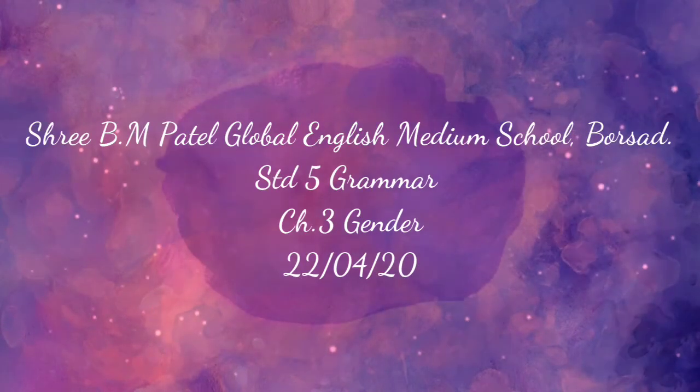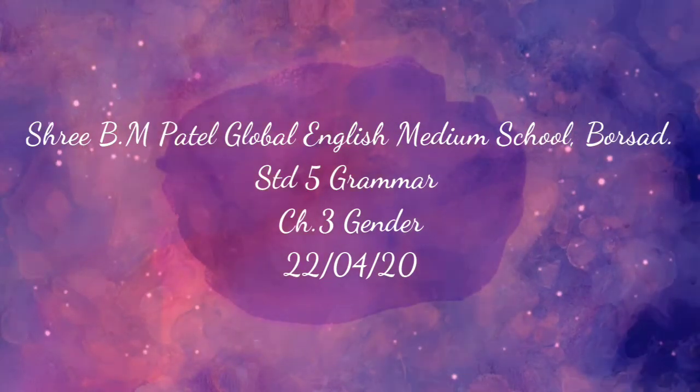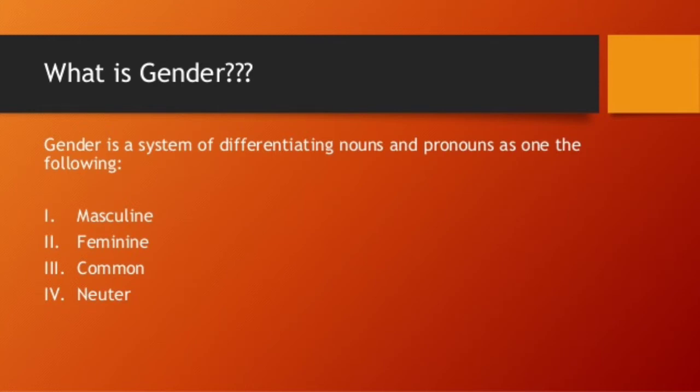Good morning dear friends, today we are going to learn chapter 3: Gender. What is gender? Gender is a system of differentiating nouns and pronouns. There are four types of gender: masculine, feminine, common, and neuter.